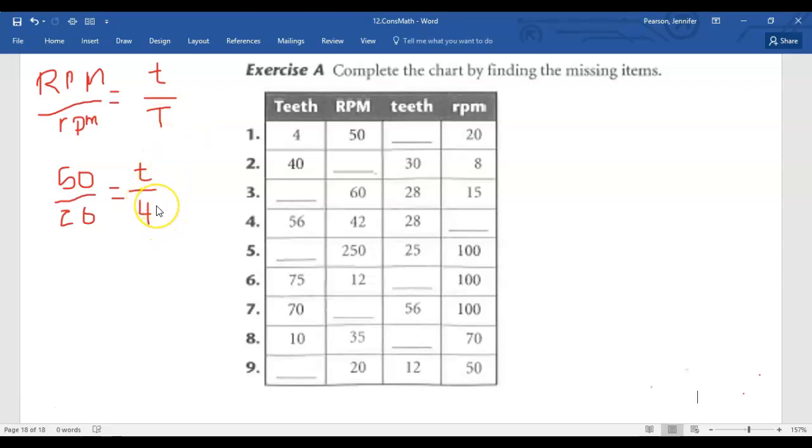When the proportion is set up, then we use cross multiplication and division. So we multiply the two values that we know diagonally. Sometimes our variable will be here, sometimes here. We're always going to just multiply diagonally the two numbers that we know. So in this case, we'll be multiplying 4 times 50. If I had known the two numbers here, I would have multiplied there first.